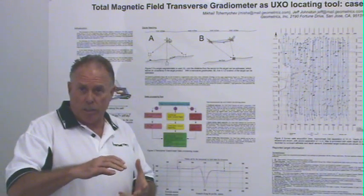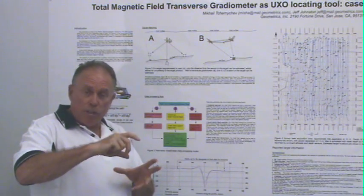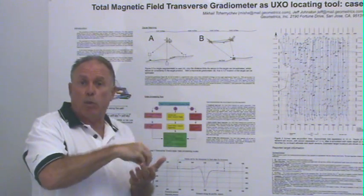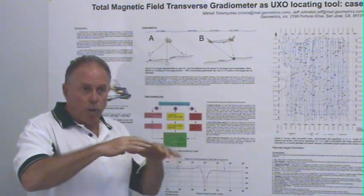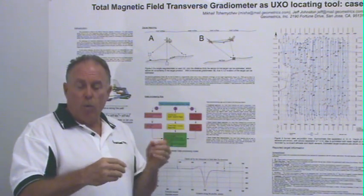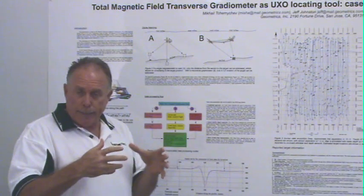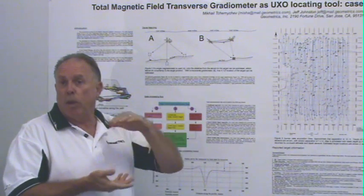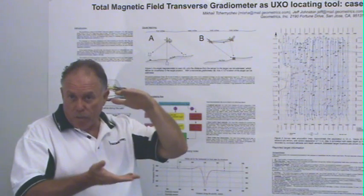Inversion is the mathematical process by which we invert the data to determine precisely where the target is. From the shape of the anomaly, we can determine its size and its depth. Since we know the altitude of the array above the seafloor, we can determine the depth of burial of the target.